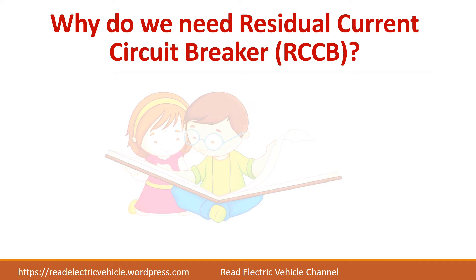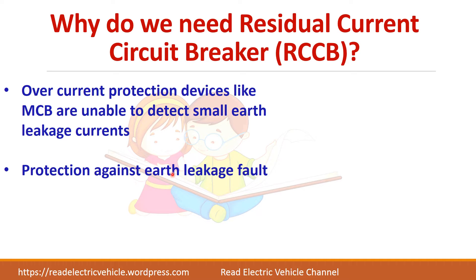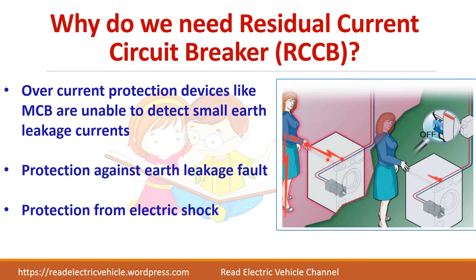Why do we need a residual current circuit breaker? We already use MCBs for overcurrent protection — whenever there is a fault, MCBs are good enough to isolate the circuit. But the problem with MCBs is that they are unable to detect small earth leakage current. To protect against earth leakage current, you have to use an RCCB. The main advantage is that it protects us from electrical shock.